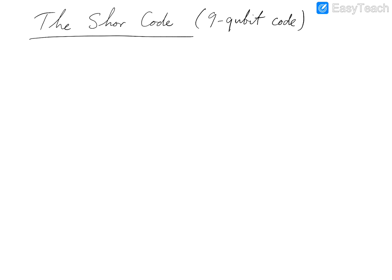A very nice error correction code used in quantum computation is called the 9-qubit Shor code, which was invented by Peter Shor in the mid-90s. What's very nice about this code is that it protects a qubit from an arbitrary error, so no matter what kind of error we have, we can always use the Shor code to recover — whether it's a phase flip error or a bit flip error.